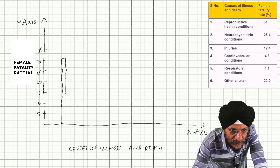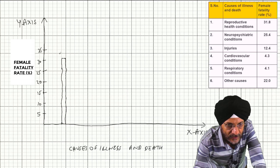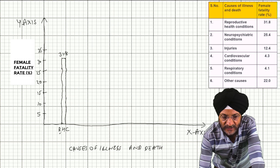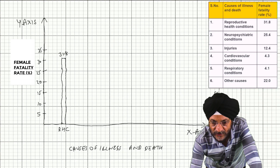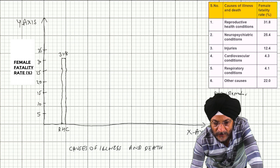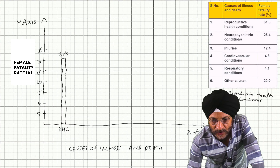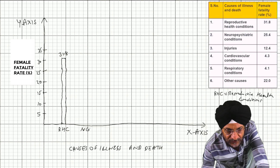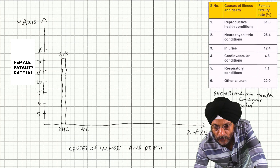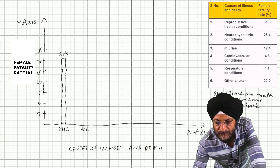You have to draw the lines straight in the examination. This is 31.8 and this is reproductive health conditions. As I am mentioning in short words, you can write 'RHC' for reproductive health conditions. Next we take neuropsychiatric conditions — you can write 'NC' here. You must clearly mention that you are using these abbreviations.